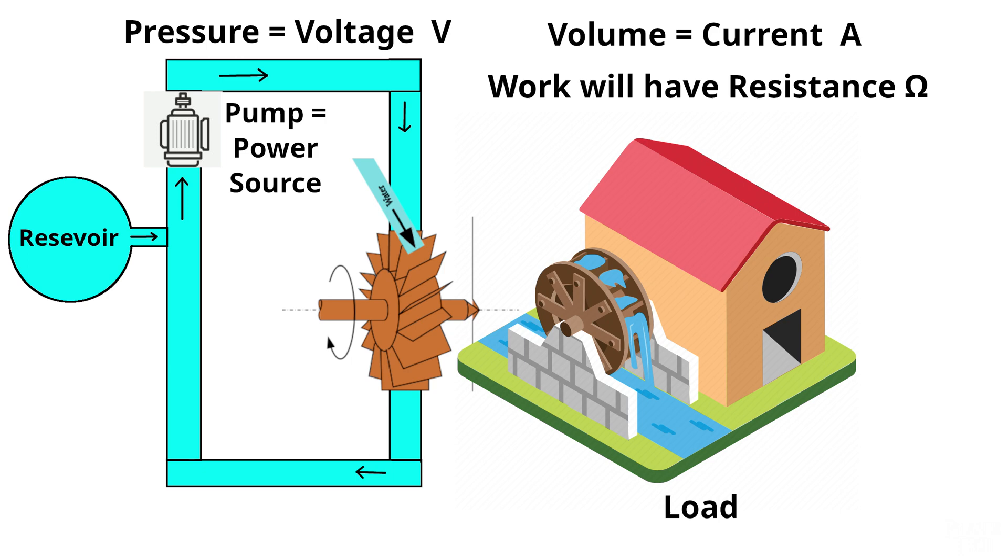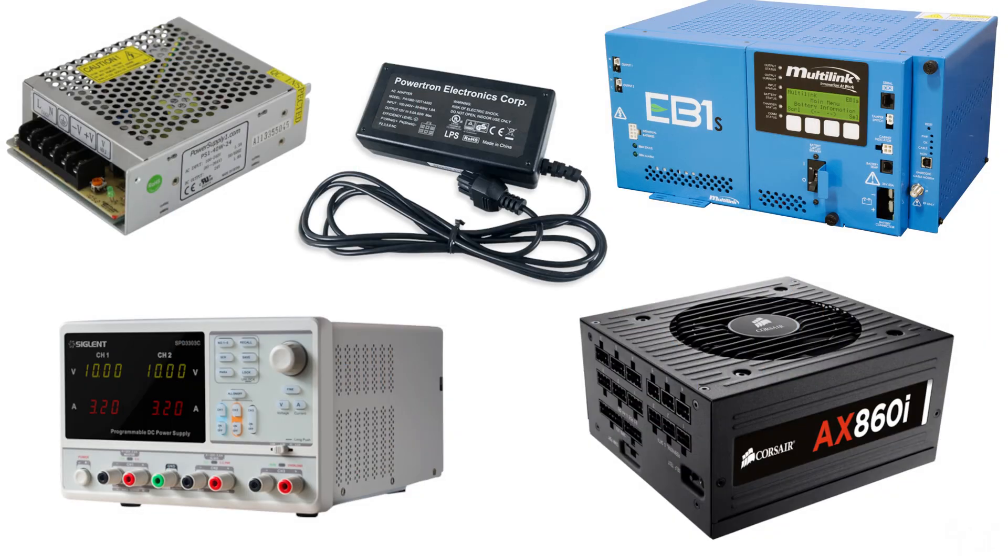The water pump is considered the power source in this analogy. In an electrical circuit, the power source can be a number of different things, including a battery or a power supply. Most power supplies are voltage regulated, meaning they will provide a consistent voltage to the circuit, and will supply whatever current the circuit requires, as long as the required current doesn't exceed the power supply's rated capacity.